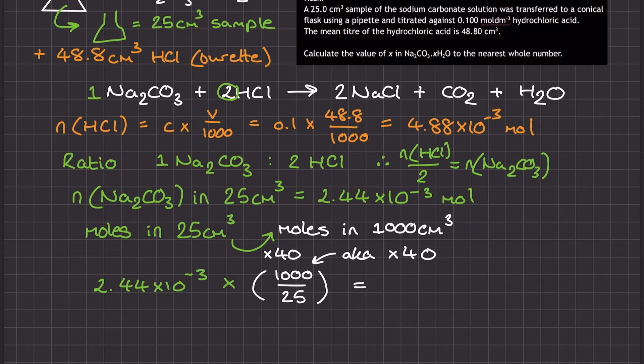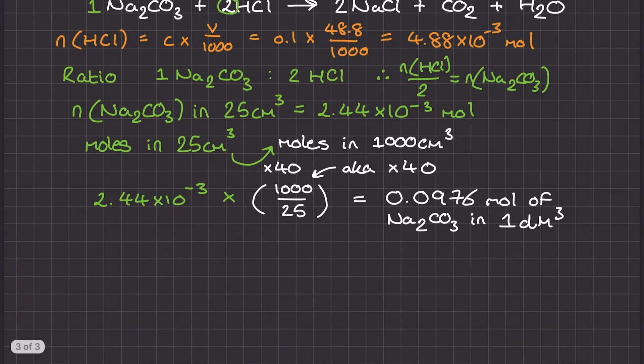to volume over the from volume. So for example, here I would multiply by 1000 over 25 because then I'm going to the 1000 centimetre cubed solution from the 25 centimetre cubed solution here. The choice is yours. Either way, the value of moles in the large 1 decimetre cubed solution is 0.0976 mole.